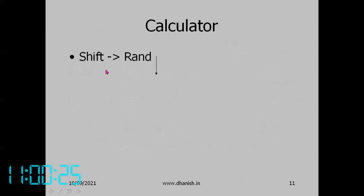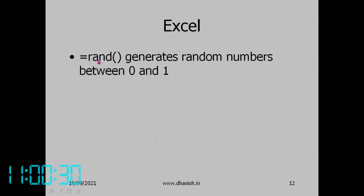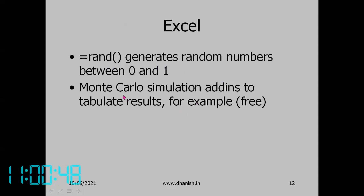In a calculator, you can generate random numbers using Shift-RAND. In Excel, the function =RAND() generates random numbers between 0 and 1. Every time you press F9, another random number is generated. You combine all trials by repeating this a large number of times, and several add-ins are available for this — some free add-ins are available.